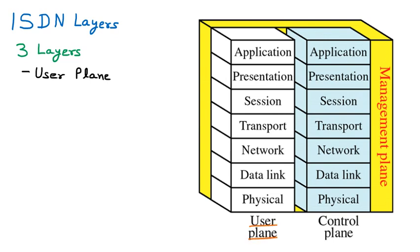Looking at the diagram, the user plane is inspired by the OSI model, where all the layers of the OSI model are taken into account. The layers — physical, data link, network, transport, session, presentation, and application — are taken from the OSI model, and with the help of these layers, user-to-user communication is achieved.